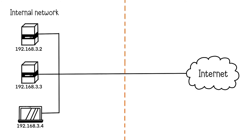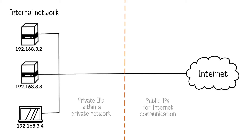In an organization's internal network, private IP addresses are used for internal machines. The left-hand side of the diagram shows all private IP addresses. However, internal IP addresses cannot be used for Internet communication. Consequently, public IP addresses are required to access the Internet.